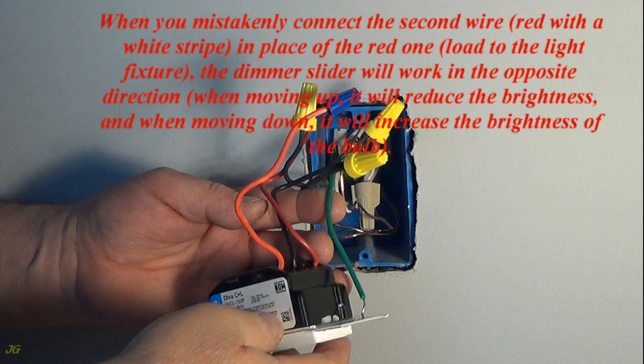When you mistakenly connect the second wire (red with a white stripe) in place of the red one (load to the light fixture), the dimmer slider will work in the opposite direction. When moving up, it will reduce the brightness, and when moving down, it will increase the brightness of the bulb.